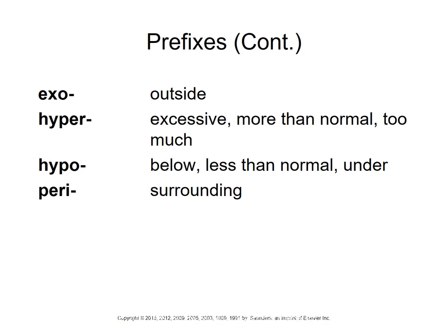'Exo-' means outside. Two very common prefixes to keep straight: 'hyper-' means more than normal or excessive — like hyperactive. 'Hypo-' means below or less than — like hypodermic, a needle going under the skin. 'Peri-' means around or surrounding. For example, pericarditis: '-itis' means inflammation, 'peri-' means surrounding, 'cardi' means heart — so pericarditis is inflammation surrounding the heart.